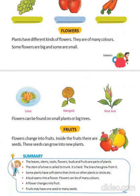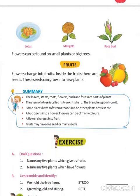Plants have different kinds of flowers of different colors. Some flowers are big and some are small. This is a lotus flower, this is a marigold, this is a rose. Flowers change into fruits, and inside every fruit there are seeds — and these seeds can grow into new plants.